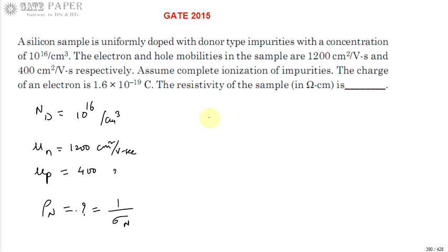We know conductivity of n-type σn = nn·q·μn + pn·q·μp, where nn is electrons in n-type and pn is holes in n-type. This is approximately equal to nn·q·μn because nn electrons in n-type are majority carriers and holes are minority carriers.